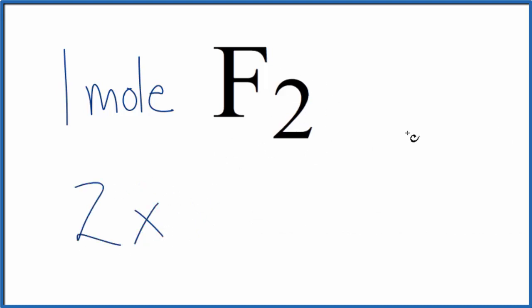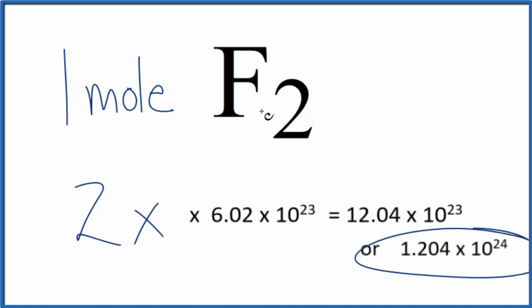we would multiply two times Avogadro's number, and that would give us the number of atoms, the number of fluorine atoms in one mole of F2, diatomic fluorine, sometimes called fluorine gas.